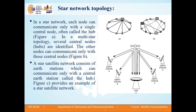In multi-star topology, several central nodes are identified, and the other nodes can communicate only with those central nodes. Figure B shows multi-star topology, which includes three central nodes with other nodes connected to them. A star satellite network consists of earth stations which can communicate only with a central earth station called the hub. Figure C shows an example of a star satellite network, where there is one hub through which earth stations communicate with the satellite.